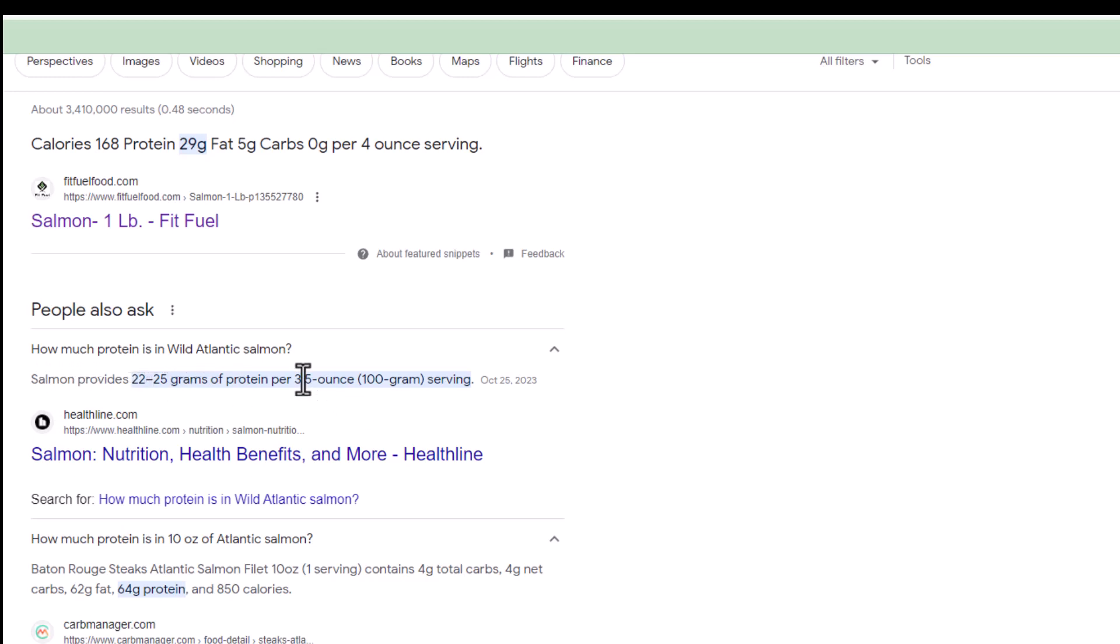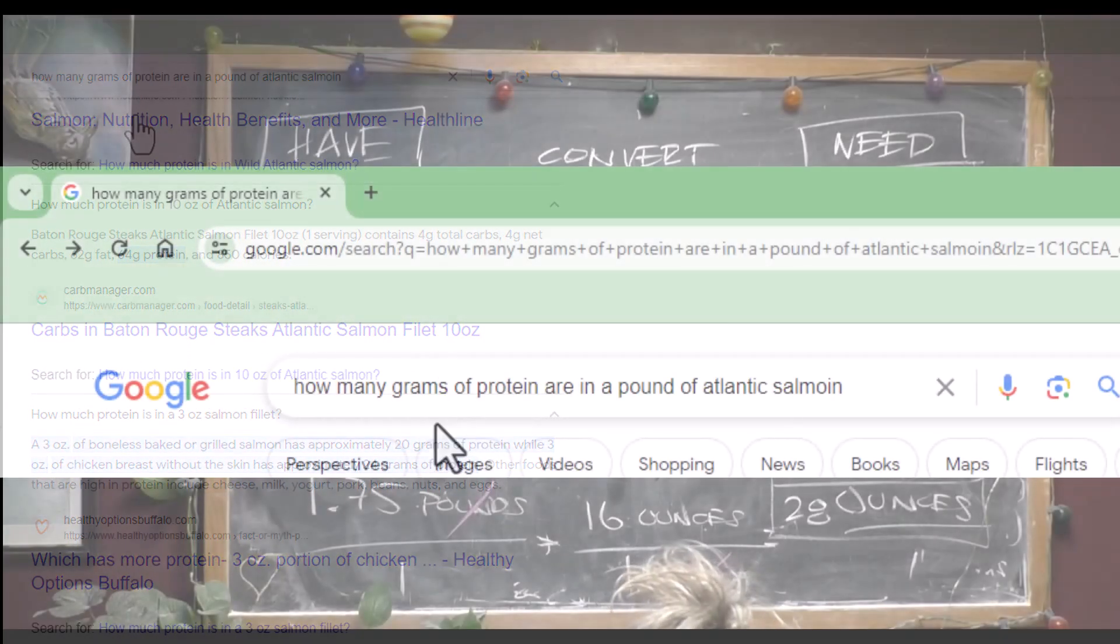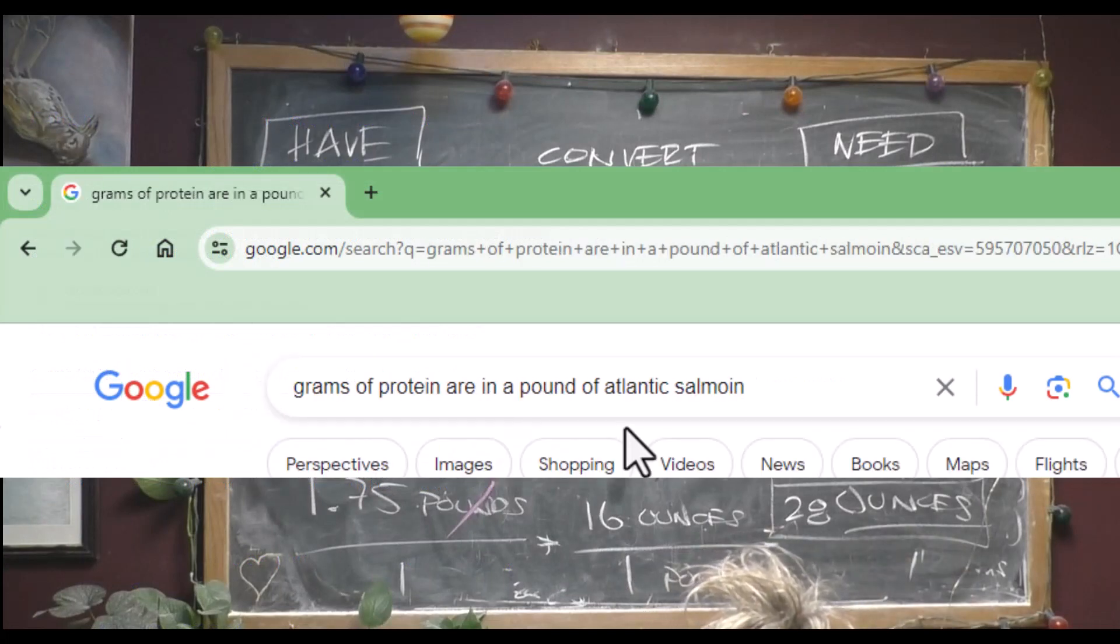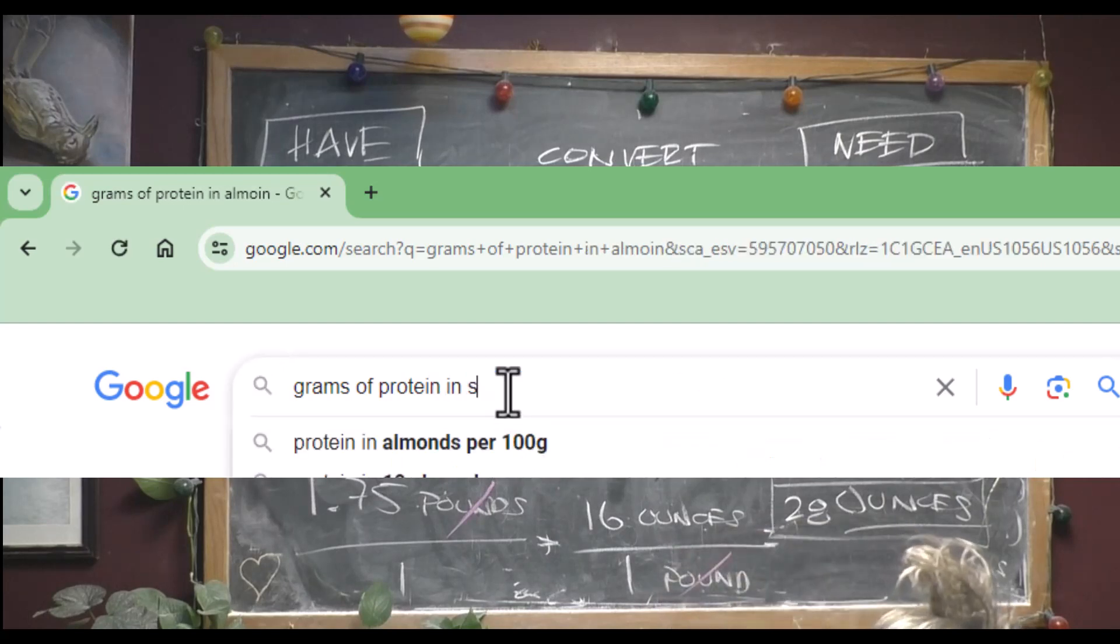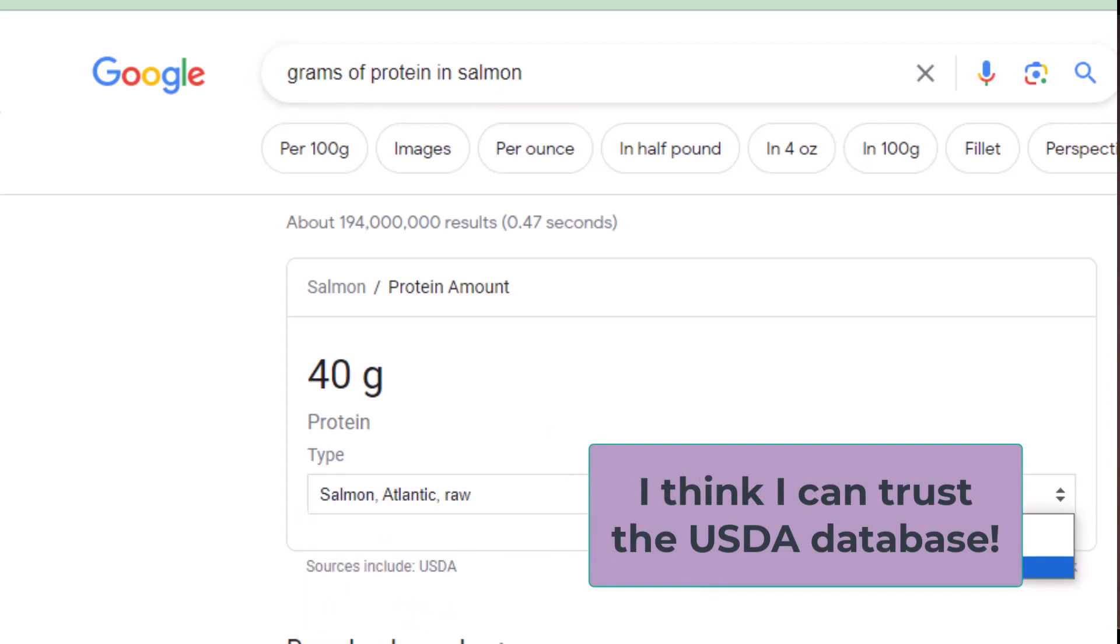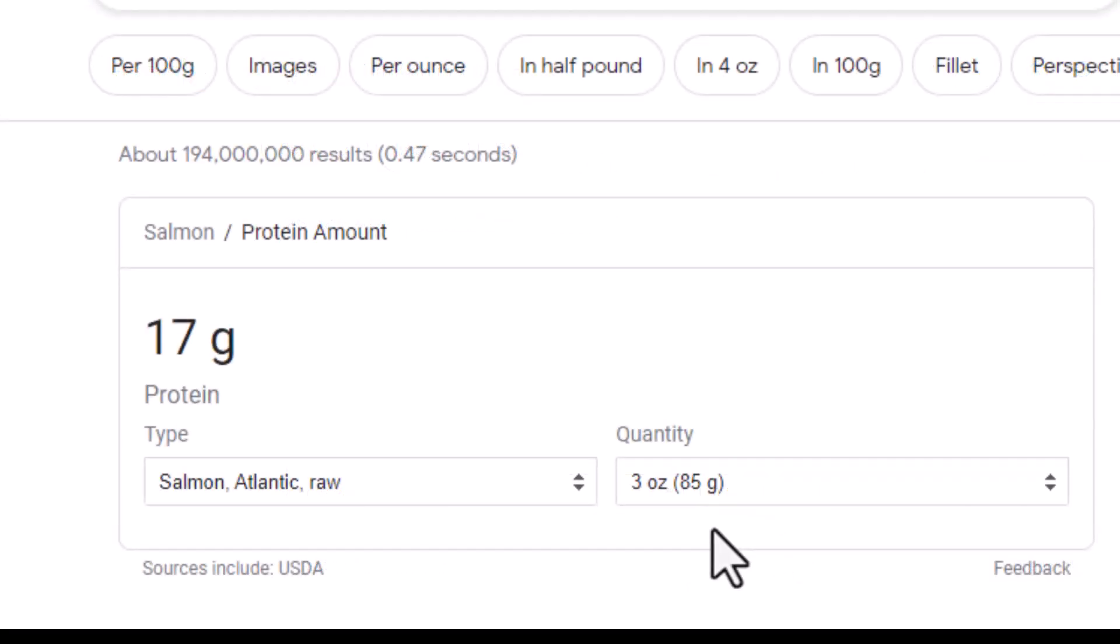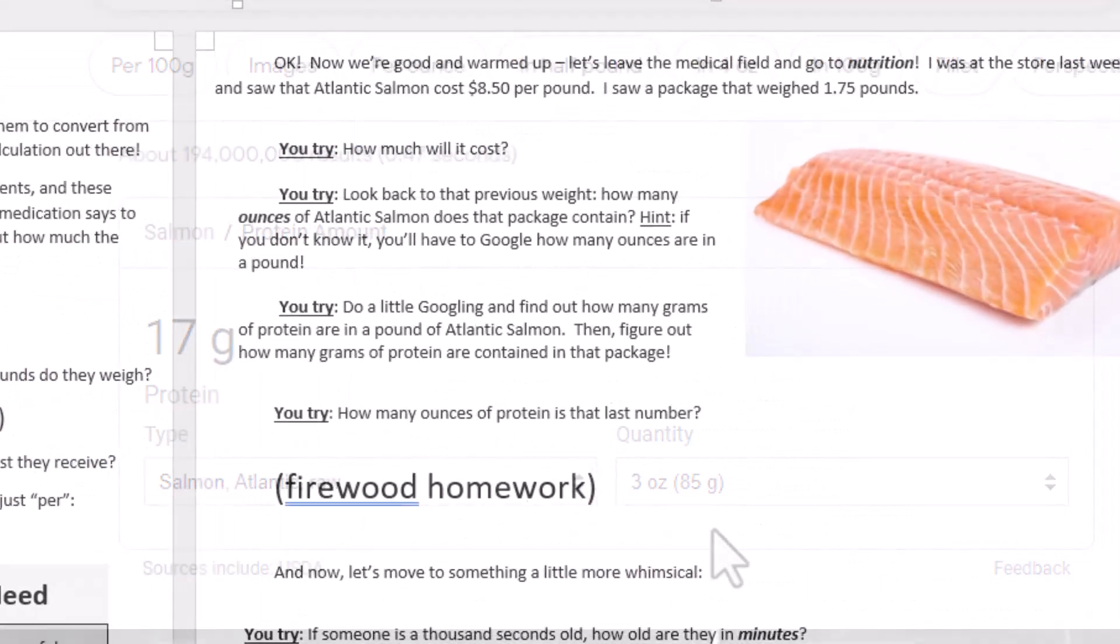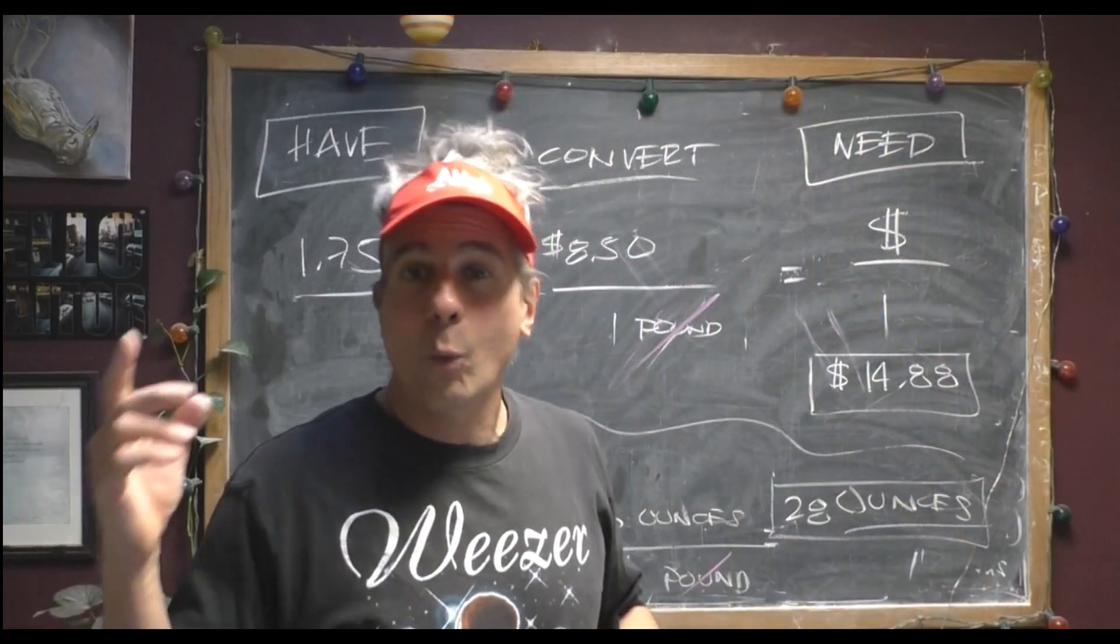I'm going to change my search a little bit. Grams of protein in salmon. Here we go. 17 grams of protein in three ounces. We can use this. And here's why. There are 17 grams of protein per three ounces of Atlantic salmon. But I asked you to figure out how many grams of protein are in a pound of Atlantic salmon. This is good news for us. A pound is 16 ounces. We know that from the last one.